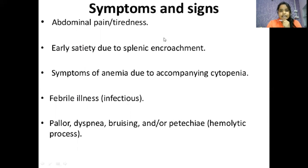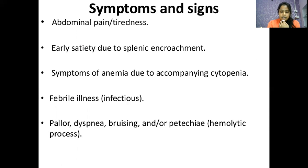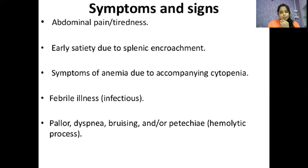Signs and symptoms of splenomegaly include: abdominal pain and tenderness or tiredness; early satiety due to splenic encroachment; symptoms of anemia due to accompanying cytopenia; febrile illness and infection; and pallor, dyspnea, bruising, or petechiae from a hemolytic process.